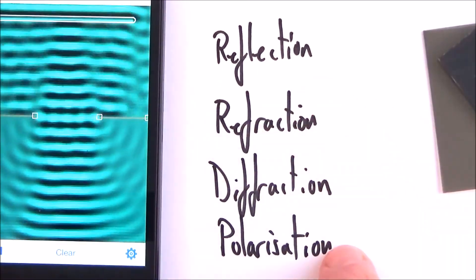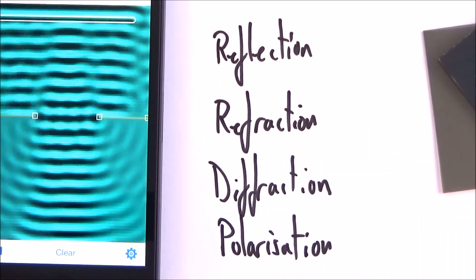So reflection, refraction, diffraction, polarization, just some of the wave properties that you need to be aware of.